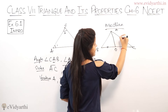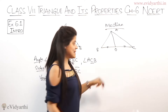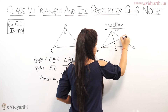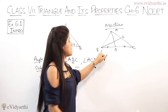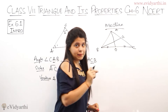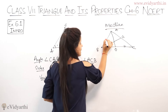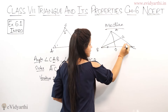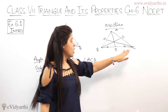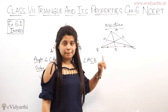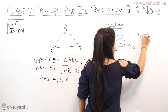Similarly, from vertex B to the midpoint of side AC — let's say point G — that gives us median BG. And from vertex C to the midpoint of side AB — let's say point H — that gives us median CH. So across one triangle you can have three medians: AO, BG, and CH.